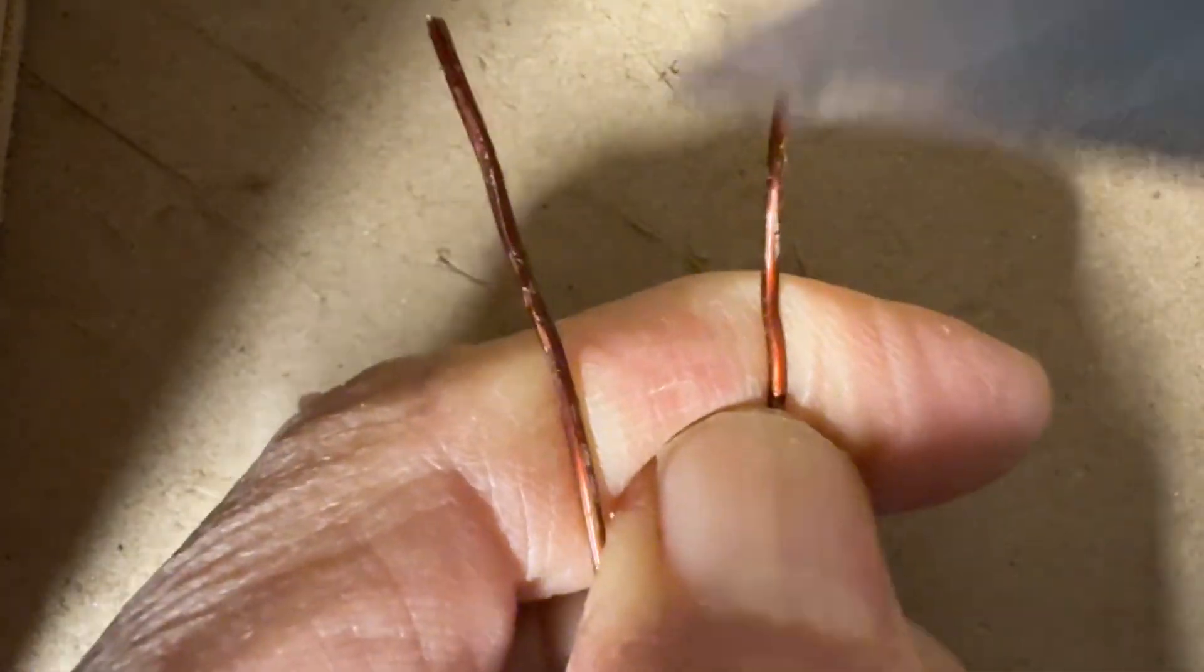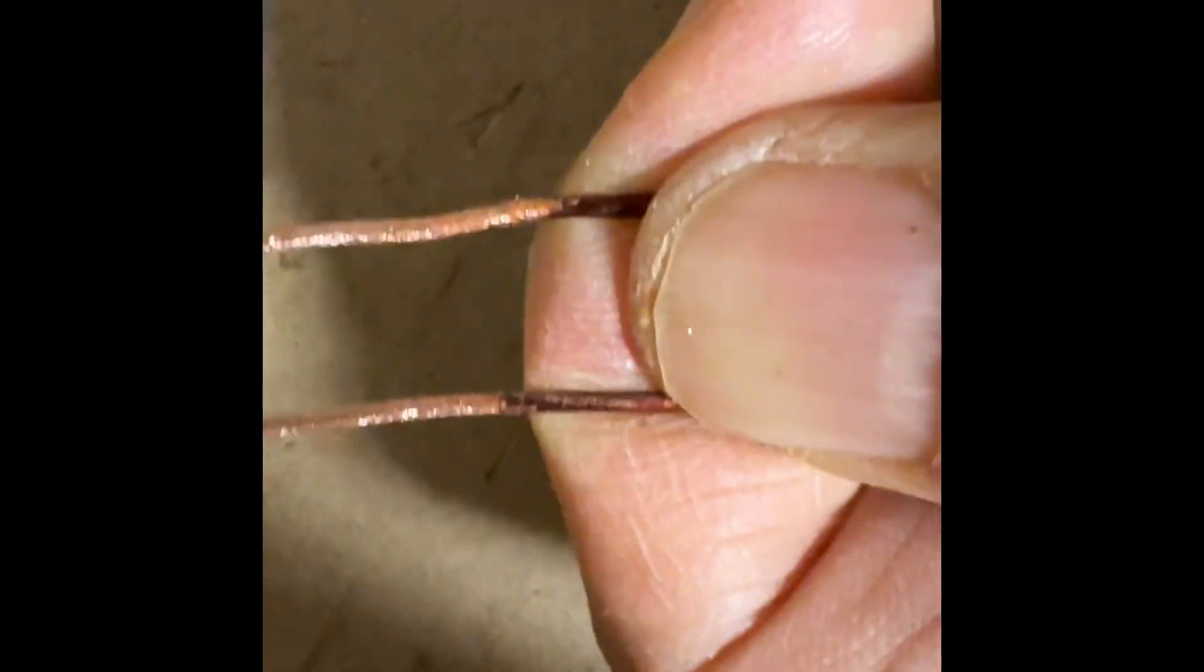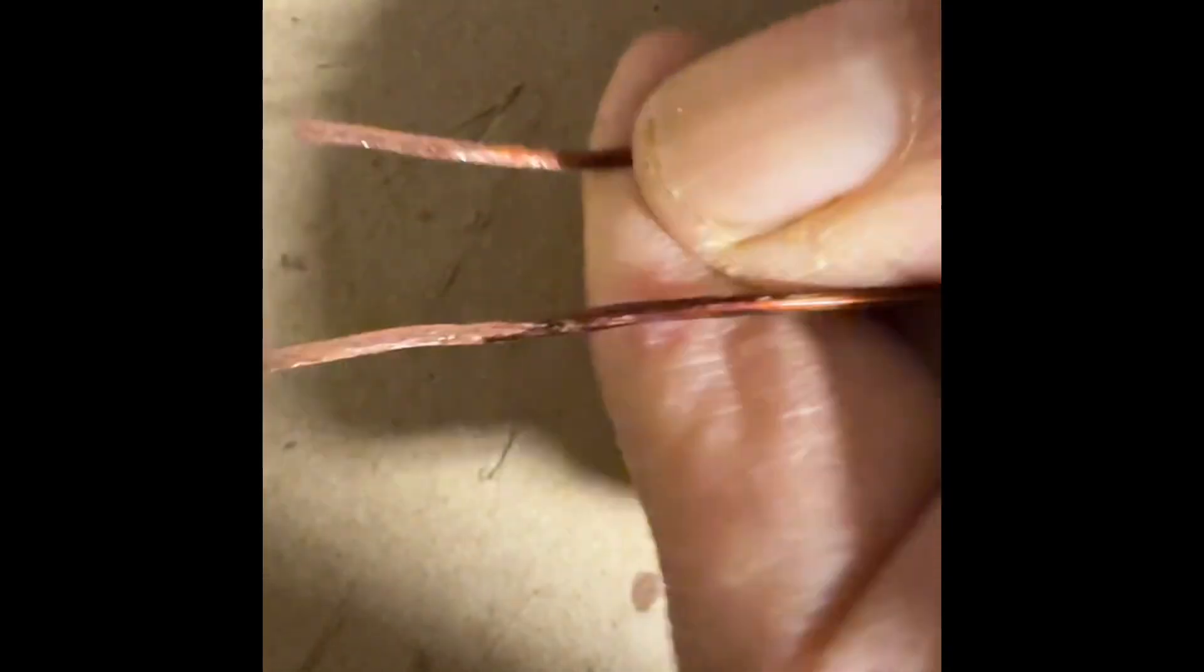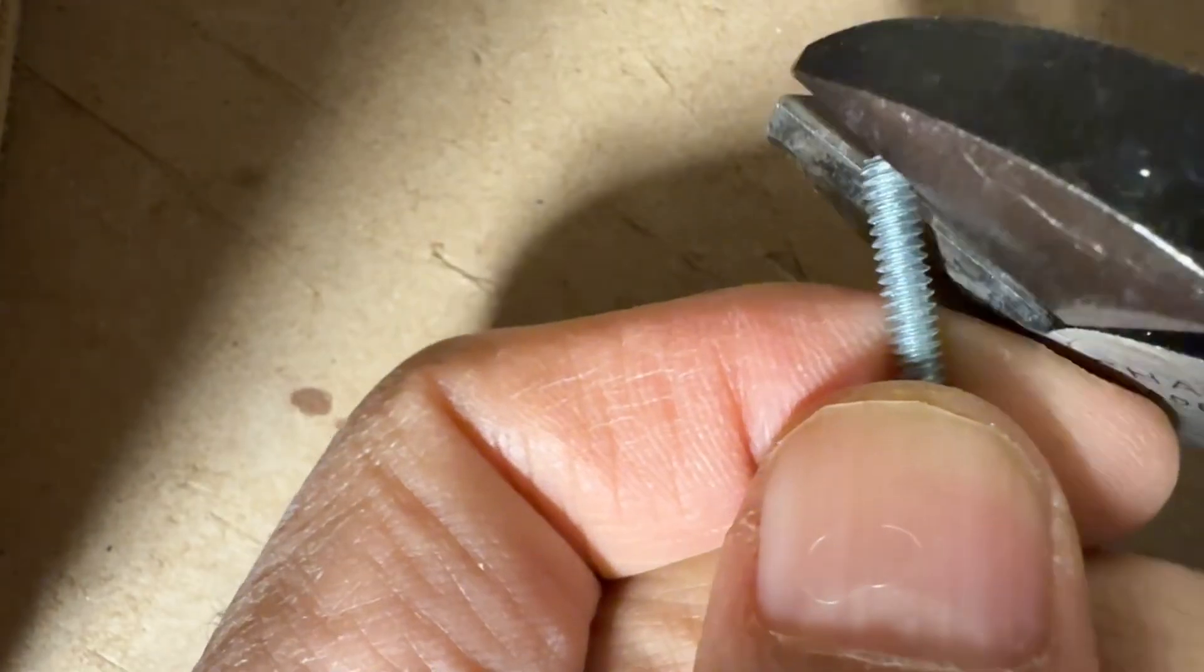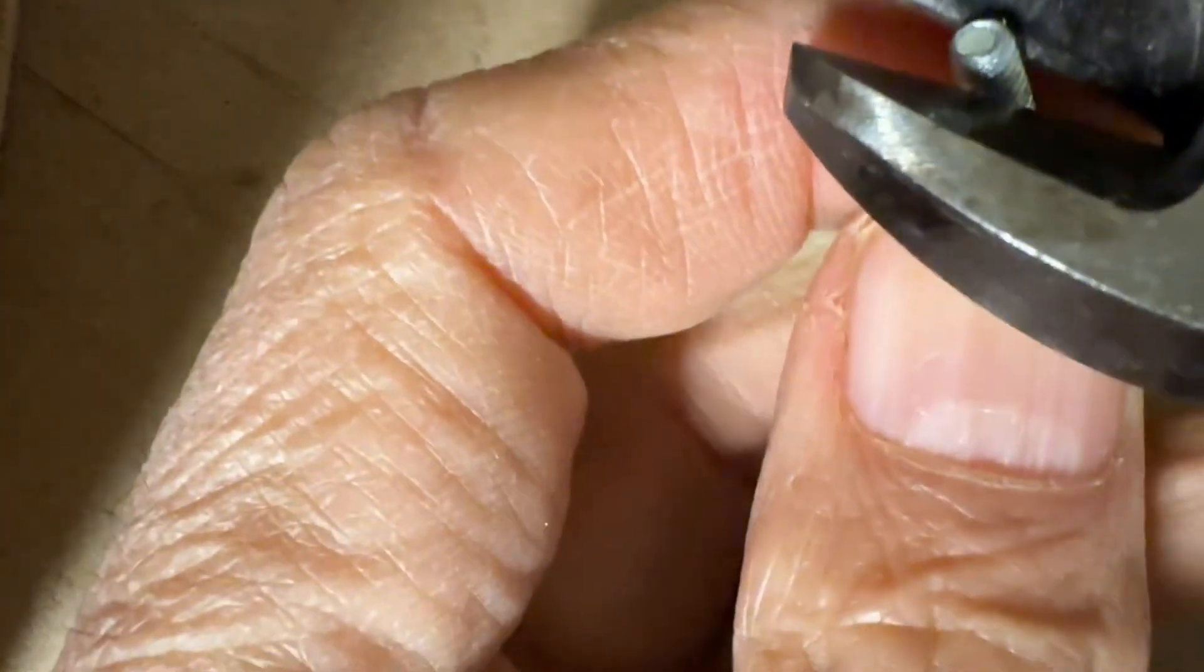Next thing to do is use a blade to strip off all the enamel. We're going to use this machine screw as our heating element. I'm going to cut it obliquely so I have a good surface for soldering.